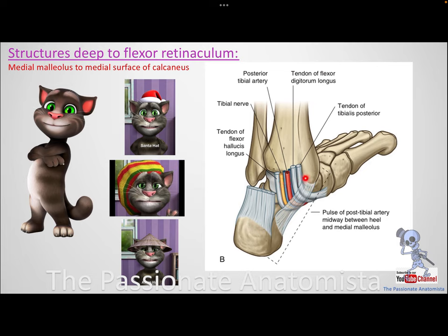If you want to remember all structures, use: Tom Does Very Nice Hats — where V stands for vessels and N for nerves. Everything is called longus because these muscles come from the leg. If a muscle originated from the calcaneus, it would be called brevis, because most foot muscles originate from the calcaneus somehow.